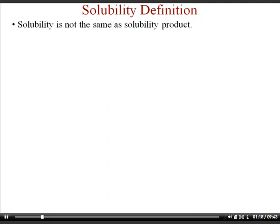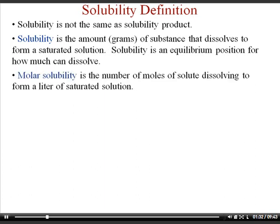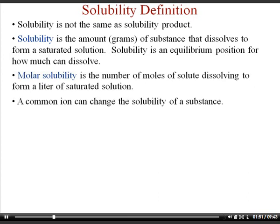Solubility is not the same as solubility product. Solubility tells you how much is dissolved to form a saturated solution — how many grams or moles dissolve. It's an equilibrium position for how much can actually dissolve. Molar solubility specifically tells you how many moles of solute dissolve per liter of solution. General solubility could be in grams or any unit, but in the metric system it's usually grams.